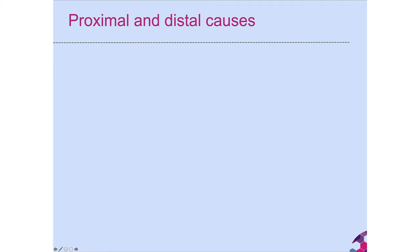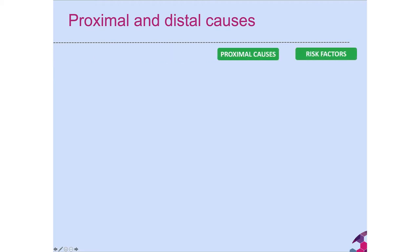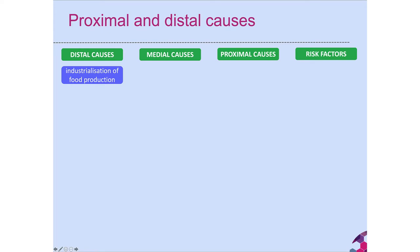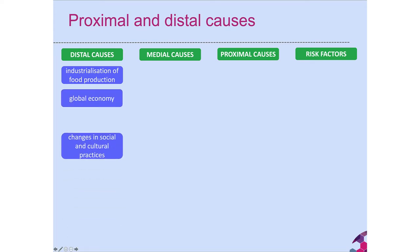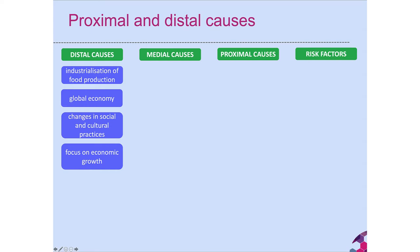We have proximal and distal causes, and in epidemiology we need to think about all the various causes and the causes of causes that generate health, well-being and disease. We start with risk factors; we have proximal causes, medial causes, and distal — distant, far away — causes. The far-away causes include industrialisation of food production, the global economy, changes in social and cultural practices at national and international level, a focus on economic growth, and the role of social media like Facebook, Twitter and Instagram. These all interact with each other.